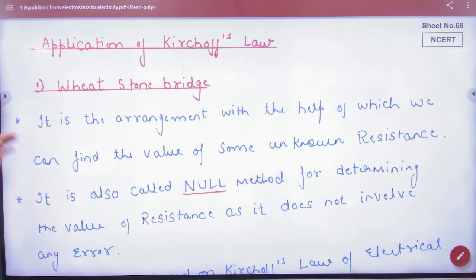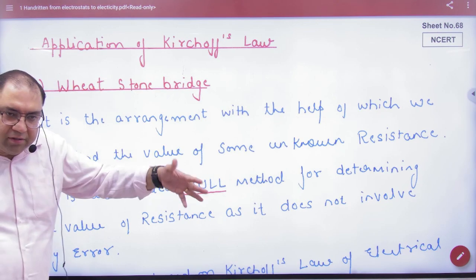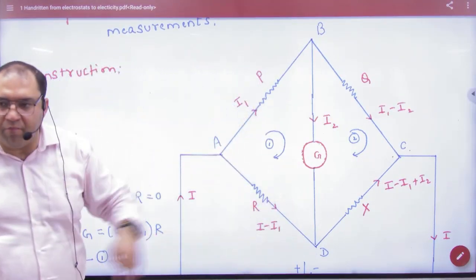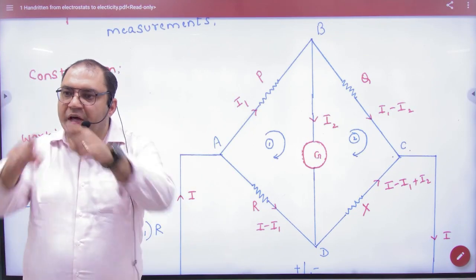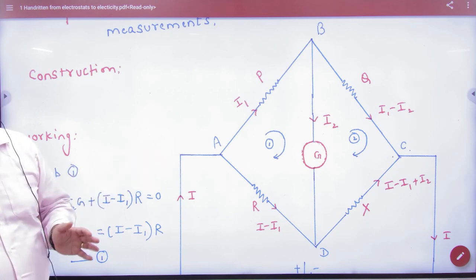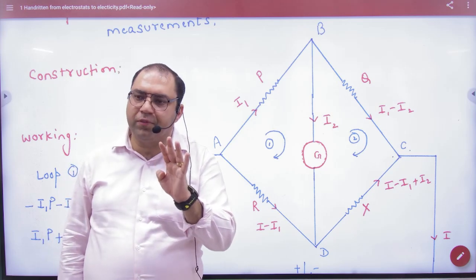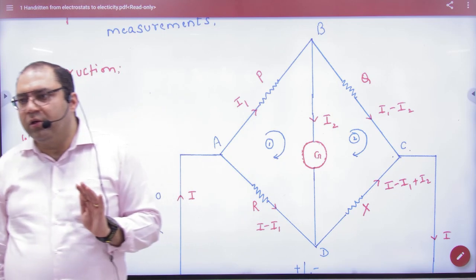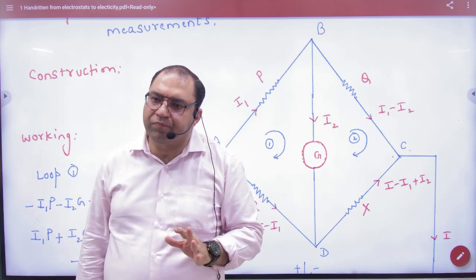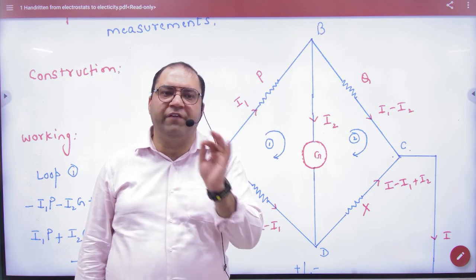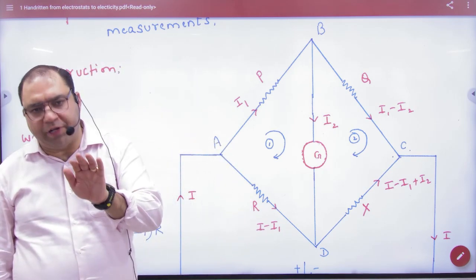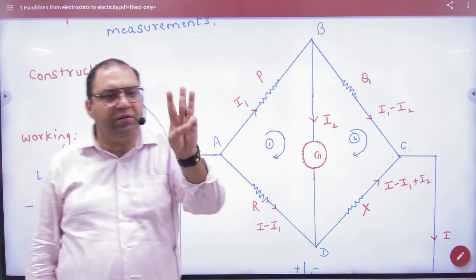Wheatstone Bridge is an arrangement of resistances in a rhombus type formation - 1, 2, 3, 4. If you put these resistances in the form of a bridge, this arrangement is called Wheatstone Bridge. Why do we do this? If you give me four resistances P, Q, R, and X, where three are known resistances and you have to find the last resistance X's value, which is unknown resistance, Wheatstone Bridge will find that fourth resistance.